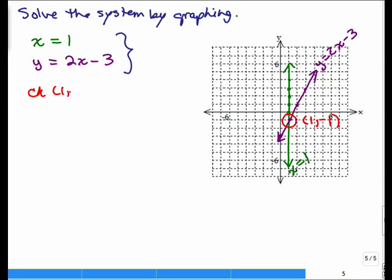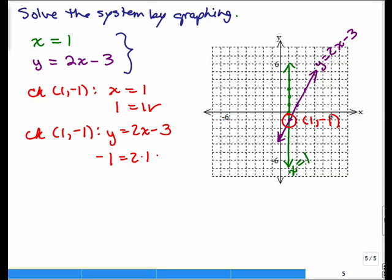We're going to check 1, negative 1 into x equals 1. Well, if we're going to put in 1 for x, hmm, yep, that works. Now let's check 1, negative 1 into y equals 2x minus 3. So we're putting in negative 1 for y, 1 for x. That gives you negative 1 equals 2 minus 3, also negative 1.